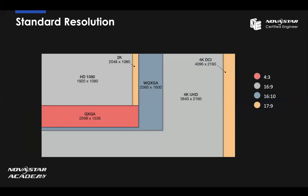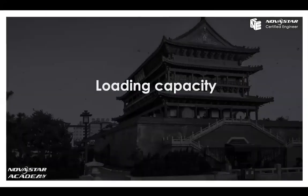We are talking about resolution. Let's see the standard resolutions. As we know, the pixel pitch is getting smaller, so the screen resolution for the same physical size will be bigger. These are the common standard resolutions from Full HD to 4K. The numbers on the chart indicate that different resolutions have different aspect ratios. Now let's move on to loading capacity, which determines how many cabinets you can connect to one output port and how many controllers you need for a project. We need to understand what loading capacity means — we don't care about pixel pitch or physical size; the total pixel number is what we focus on.